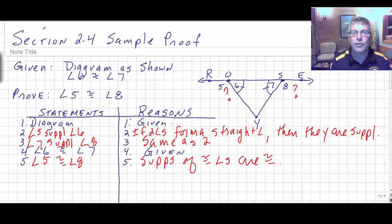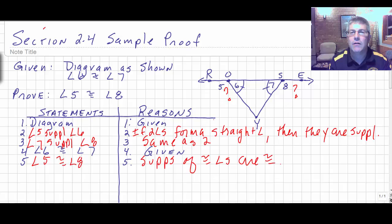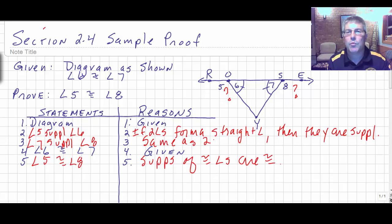That's an example of using supplements of congruent angles are congruent in a proof. I've also introduced the new reason: if two angles form a straight angle, then they're supplementary. That's worth committing to memory — we'll use it quite a bit. We'll practice this more when I see you in class.